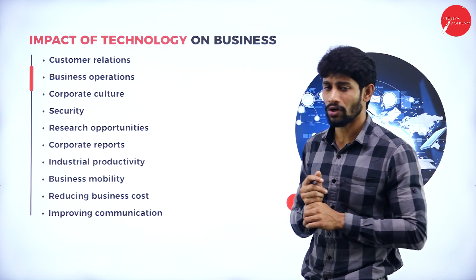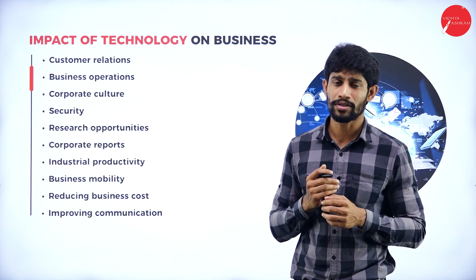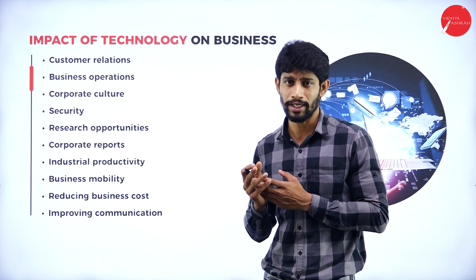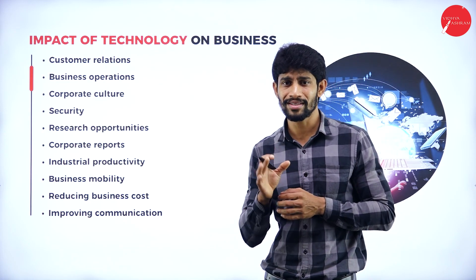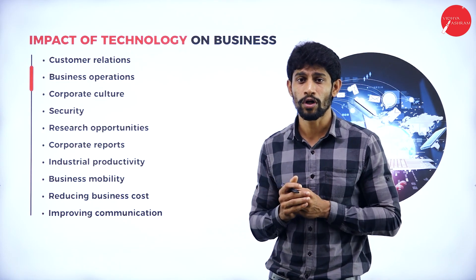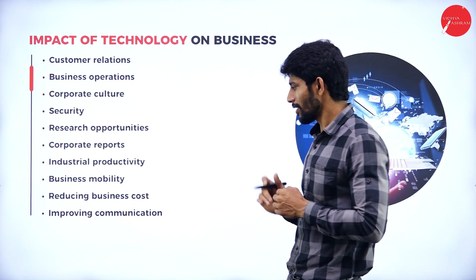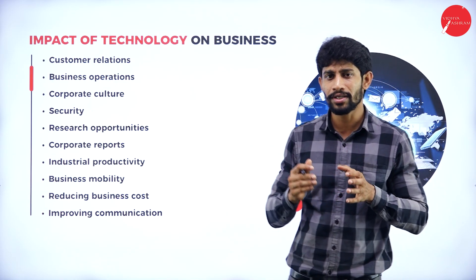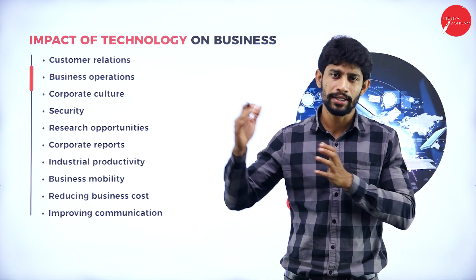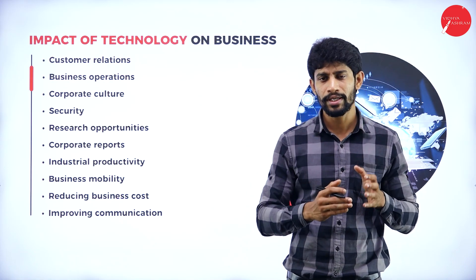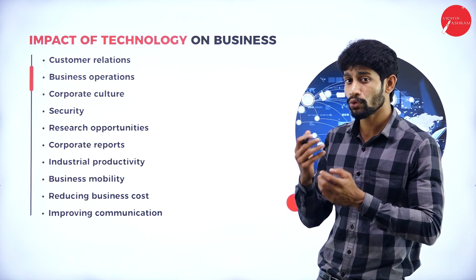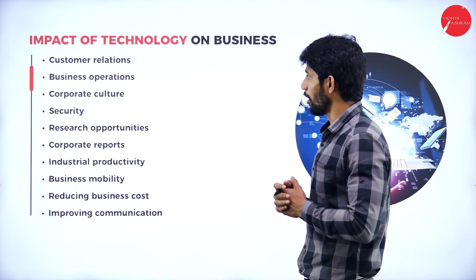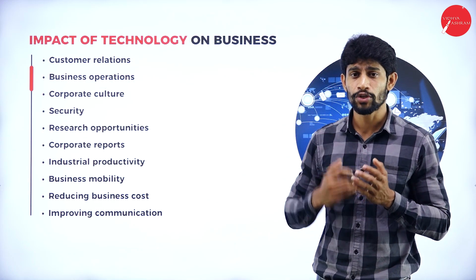Next, reducing business cost. Technology is going to reduce the business cost. If ten people are needed to do a work, a system can do all ten people's work. Instead of hiring ten people, you can take one computer and appoint one person to maintain all those details, reducing costs. Next, improving communication. Technology improves communication between the management and the society, or between the management and the customers. These are all the impacts of technology on our businesses in day-to-day life.